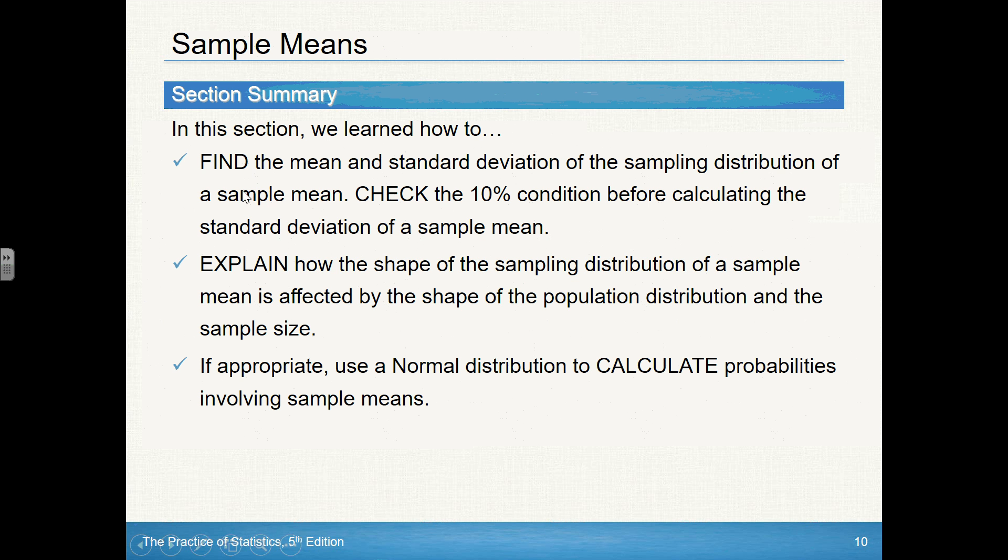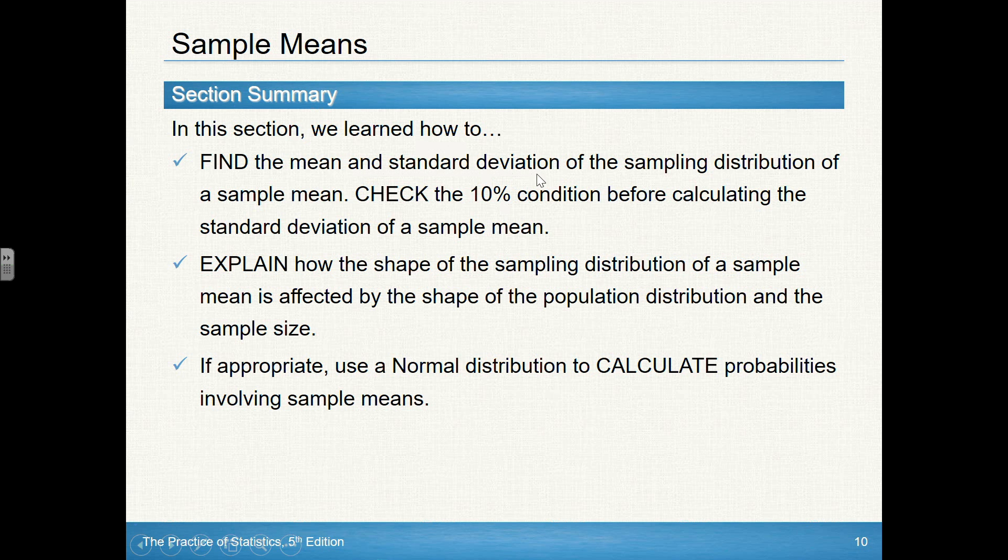So, some similarities, some differences with proportions. How to find the mean? Well, the mean is going to be the same. But to find the standard deviation, we have a different rule here. 10% condition still holds. As far as the normality check for the shape, that's different here. With proportions, we looked at n times P had to be at least 10, and n times 1 minus P both had to be at least 10. Here, either the population is normal, or the central limit theorem can be applied to show you that you have a sample size large enough that you will yield a sampling distribution that is approximately normal as well.